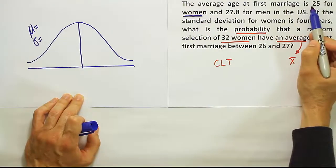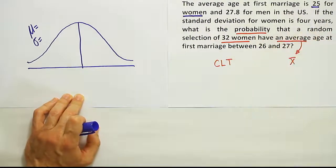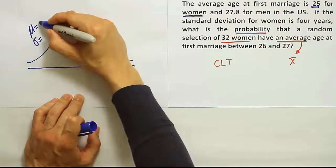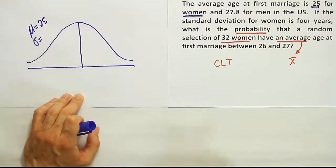So I'm going to look for the 25, right? The average age at first marriage is 25 for women. So I'm going to put 25 here.